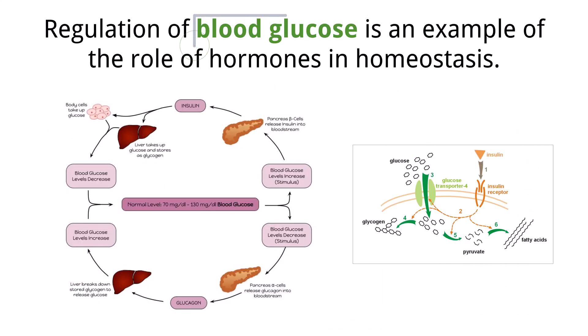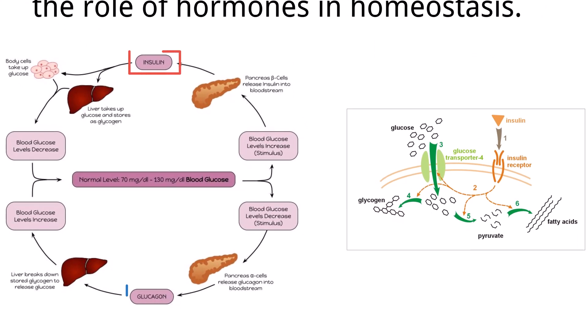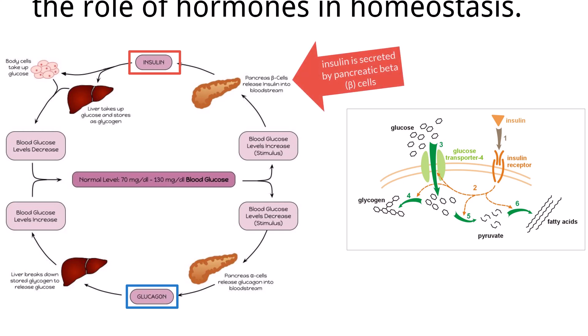The regulation of blood glucose is a key example of how hormones maintain homeostasis in the human body. Two hormones, insulin and glucagon, are secreted by endocrine cells in the pancreas. Insulin is released by beta cells in the pancreas, while glucagon is released by alpha cells.